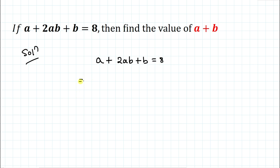In the next step, in order to factorize, let's just multiply 2 on both sides of the equation. So we have 2a plus 4ab plus 2b equals to 16.